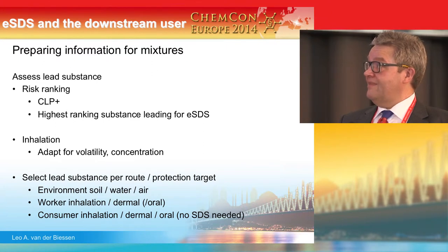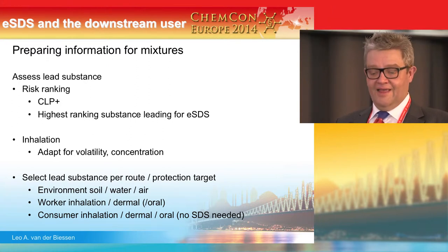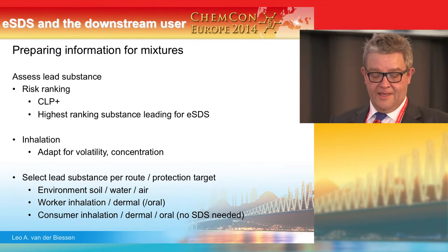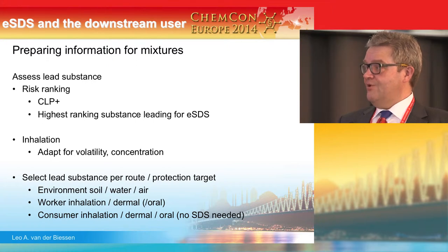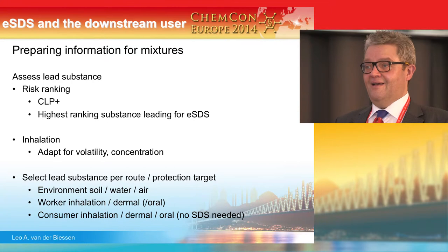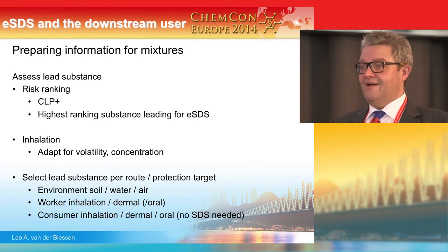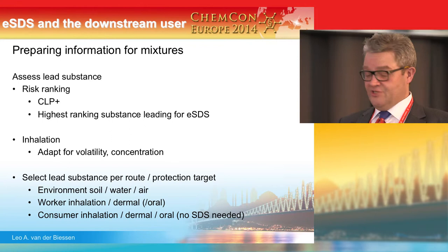I would also suggest that before you start selecting the risk management measures, you do a risk ranking. A COP method can be used for that. Use the highest risk-ranking substances as leading for selection of the risk management measures. You need to take into account that this can be different for the different routes or protection targets — you might need dermal protection for substance one and inhalatory protection for substance two.